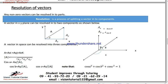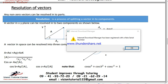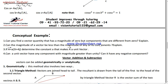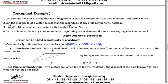Here, Z is the Z-axis, X is the X-axis, and Y is the Y-axis. These represent the axes of the vector A. Let us do some conceptual examples.